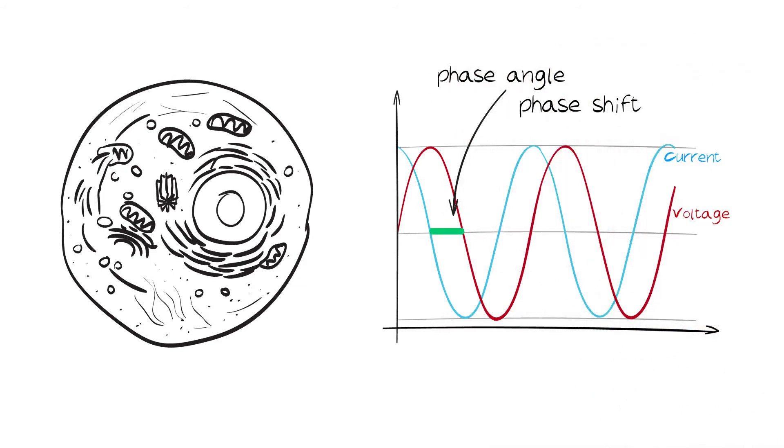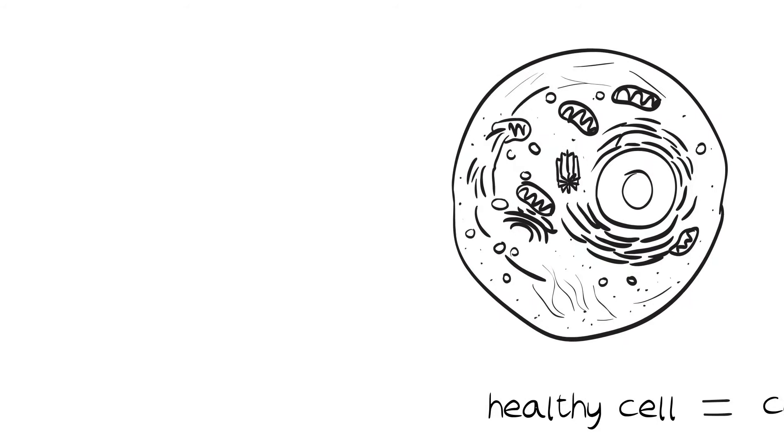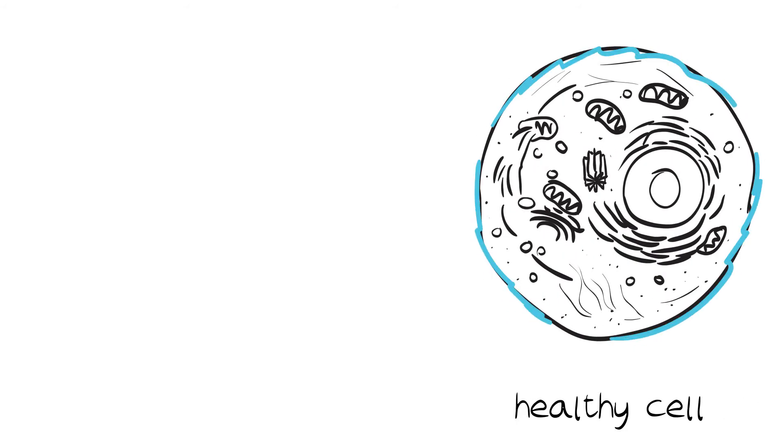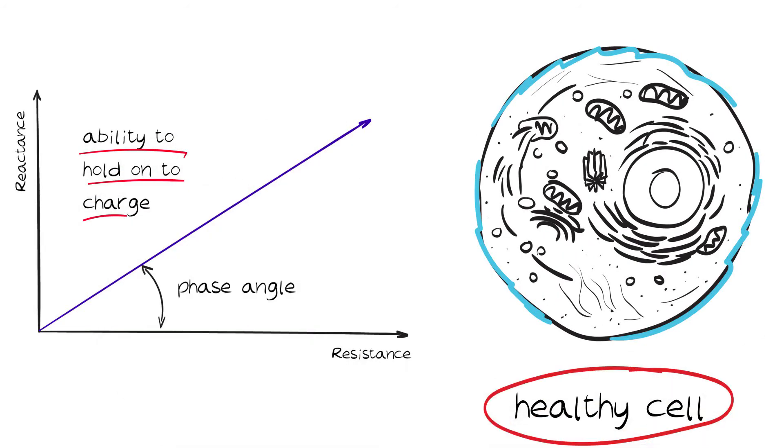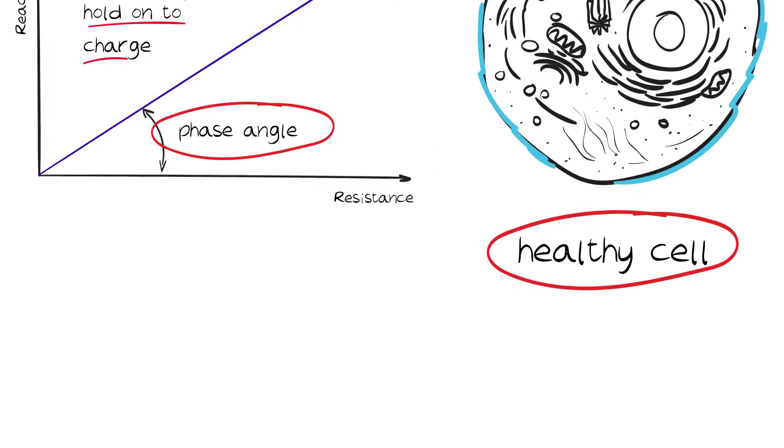The phase angle or phase shift measures the ability of that cell to act as a capacitor. The greater the ability to hold on to this charge, the healthier the cell and the higher the phase angle.